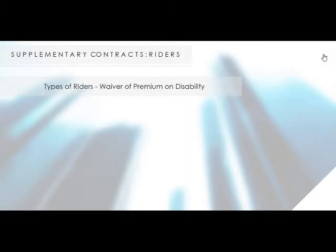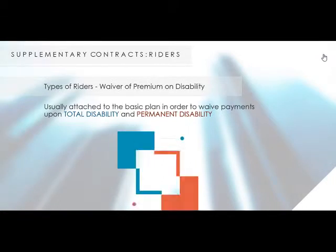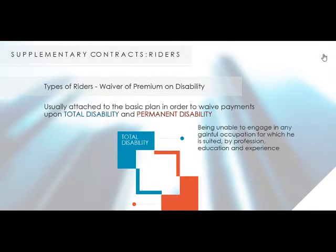Types of Riders. Let's start with the Waiver of Premium on Disability. This is usually attached to the basic plan in order to waive payments upon total disability and permanent disability. Total disability in insurance is defined as the insured being unable to engage in any gainful occupation for which he is suited, by profession, education, and experience.